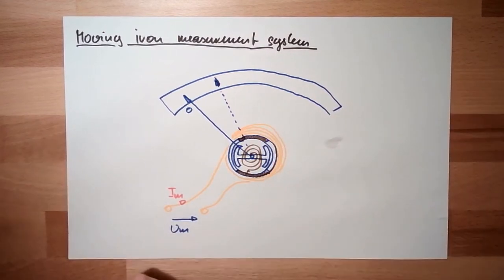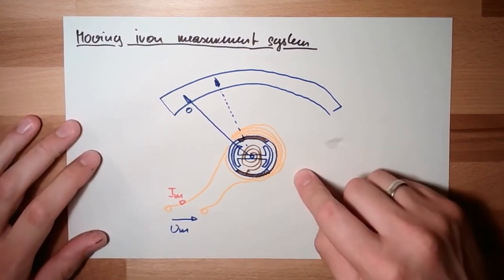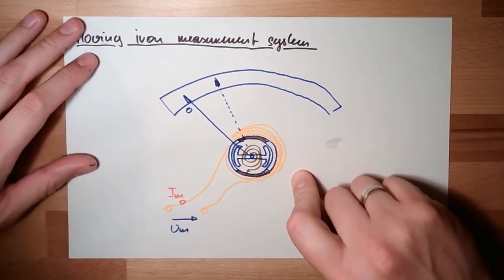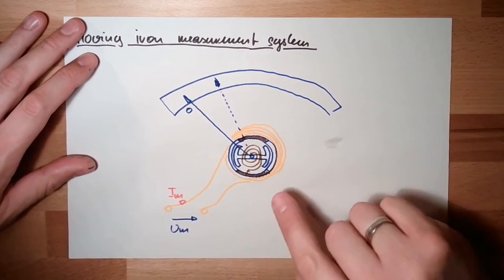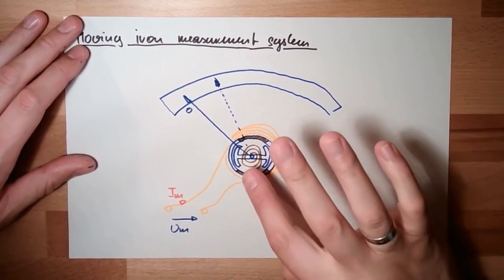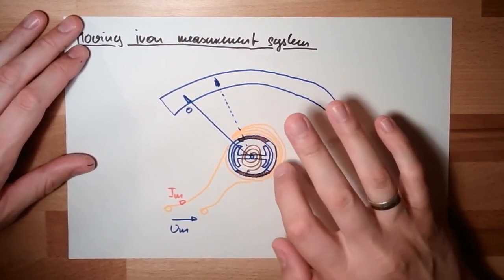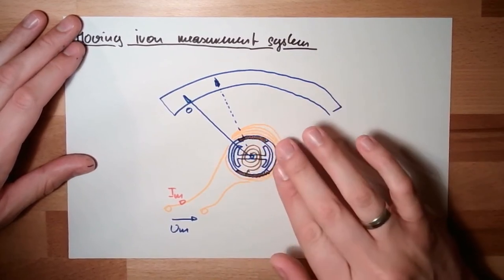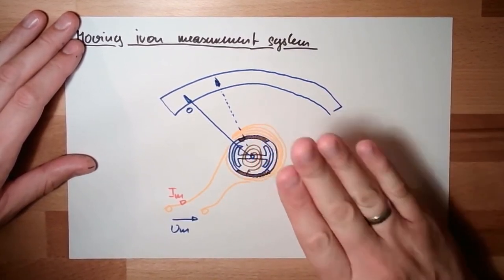So here, at the moving coil, it was a magnetic force with the electromagnet interacting with a permanent magnet. And here, we have a very similar approach, but this time we use the magnetic force which is repelling. We magnetize two things in the same manner with our current.